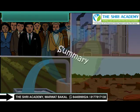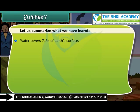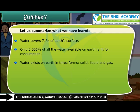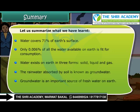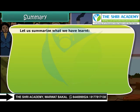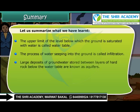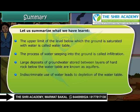Summary. Let us summarize what we have learned. Water covers 71% of earth's surface. Only 0.006% of all the water available on earth is fit for consumption. Water exists on earth in three forms: solid, liquid and gas. The rain water absorbed by soil is known as ground water. Ground water is an important source of fresh water on earth. The upper limit of the level below which the ground is saturated with water is called water table. The process of water seeping into the ground is called infiltration. Large deposits of ground water stored between layers of hard rock below the water table are known as aquifers. Indiscriminate use of water leads to depletion of the water table.